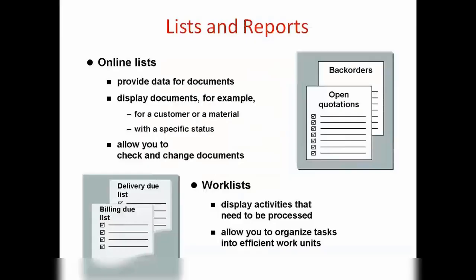In the system we have two types of worklists: one is called a list and one is called reports. In other words, you can call one an online list. An online list provides you the data for the documents — it will display them so you can find a particular sales document, billing document, or anything like that.